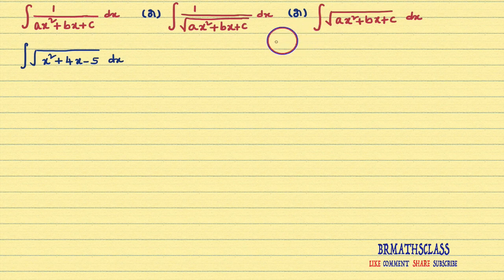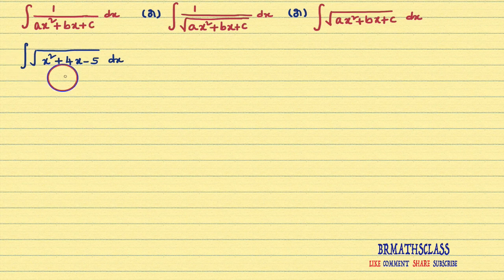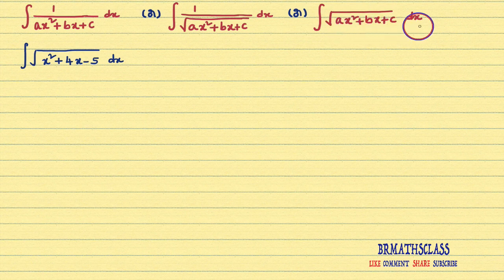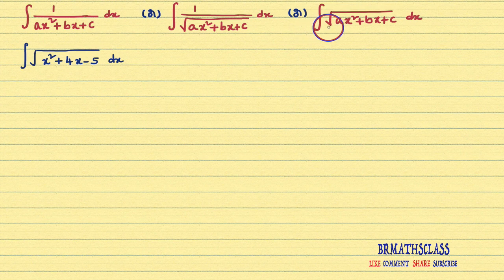First, we will identify that this integral is of which form. If you observe this integral, here 1 divided by is not there. So this integral comes of this form: integral of 1 divided by square root of ax² plus bx plus c dx. If the given integral is any one of these three forms, the procedure is same.